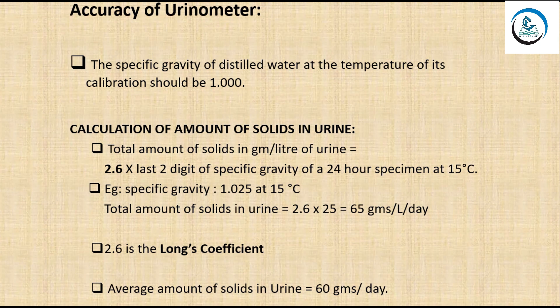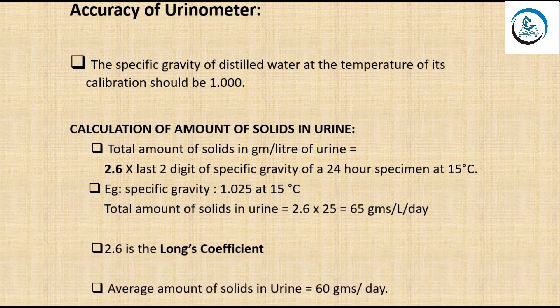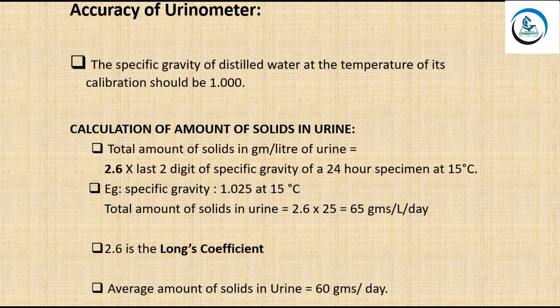To calculate the total amount of solids in urine from specific gravity, use Long's coefficient: total solids (g/L) = 2.6 × (last two digits of specific gravity of a 24-hour specimen at 15°C). For example, if specific gravity is 1.025, the calculation is 2.6 × 25 = 65 grams per liter per day. The average amount of solids in urine is 60 grams per day.